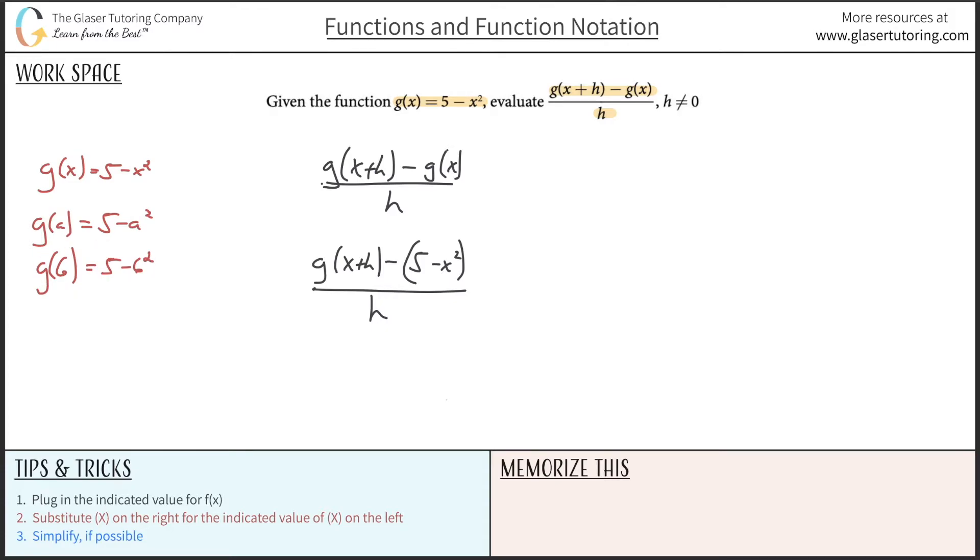Now, how do you evaluate g of x plus h? You follow the same process. I think some students get confused because there is an x in here already, and they're thinking, what do I do? No, no, no. Focus that this whole thing is just what we are substituting for our x. I don't care that this also has an x in it. This is the thing that I will be plugging in for my x value. So this thing will be equivalent to 5 minus x plus h squared. Hopefully you see the pattern here, and this is really what I need to plug into g of x plus h.